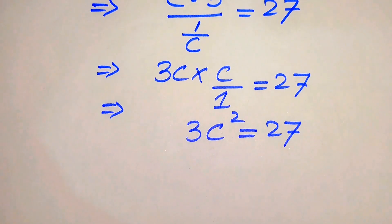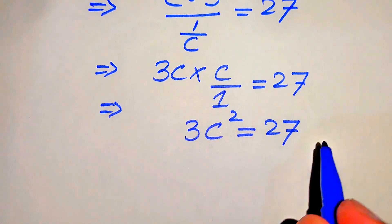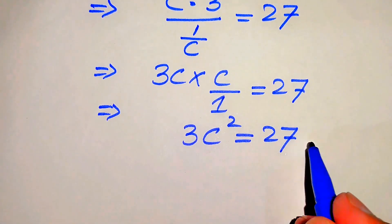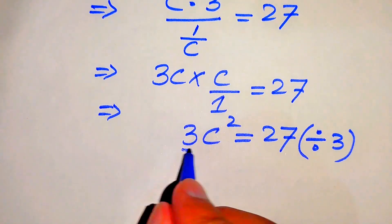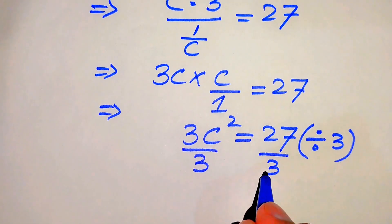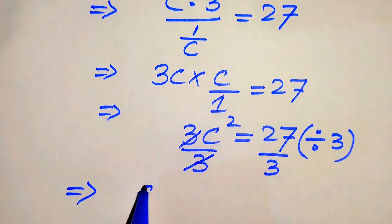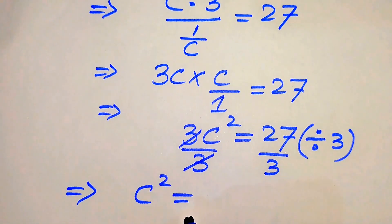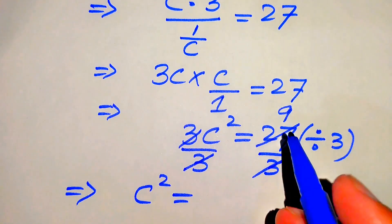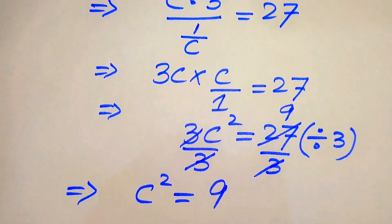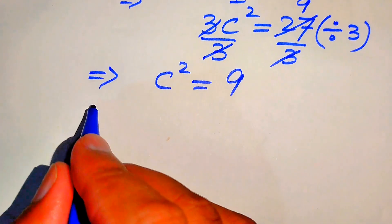So here, because we solve this problem for the values of C, we divide both sides by 3 in order to find the values of C. This 3 is cancelled out by this 3, and we get on the left hand side C squared equals — since 27 divided by 3 is 9 — we get C squared equals 9.